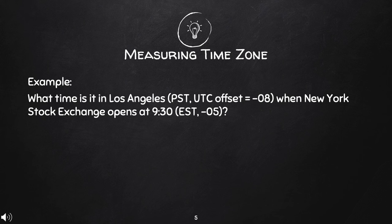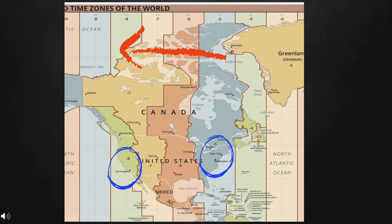Remember the UTC offset for each place: Los Angeles is negative 8 and New York is negative 5. Let us find New York and Los Angeles on the map. This is a bigger version of the map. Encircled in blue are Los Angeles on the left and New York on the right. Since we will find the time for Los Angeles as compared to New York, we will solve this as going to the left. When converting towards the left, you subtract the UTC offsets.